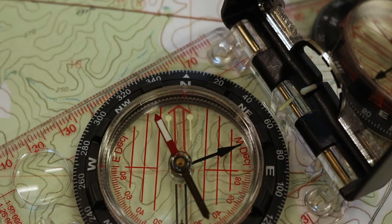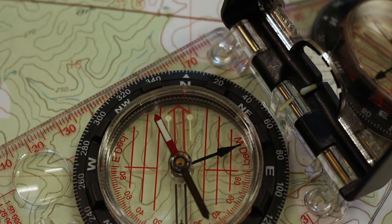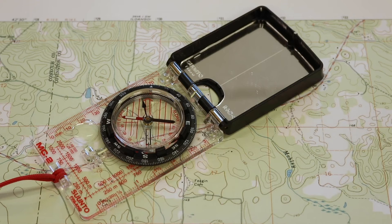An orienteering compass can be used to determine directions on a map. First, place your compass on the map so that one edge of the base plate touches both your starting point and destination.